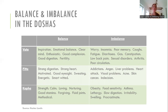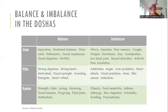If a Vata person is in balance, they are very inspiring, emotionally balanced, with a clear concise mind, enthusiasm, good complexion, good digestion, and great fertility. If they come out of balance, you might notice more worry, insomnia, poor memory, fatigue, lots of coughs, diarrhea, gas and bloating, constipation, lower back pain, and potentially poor circulation or arthritis — since Vata is responsible for movement in the body.